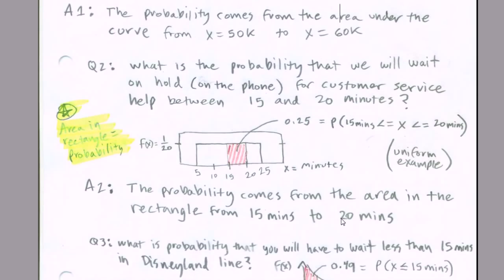Another example, and this is for our uniform distribution, where we're going to be dealing with a rectangle. We're allowed to ask a question like, what is the probability that we will wait on hold on the phone for customer service help between 15 and 20 minutes? The answer will come from area determined by a width and height calculation. We'll find out that the probability is 0.25.